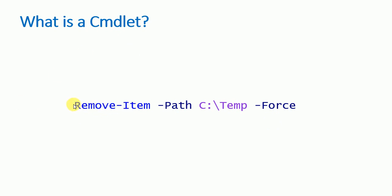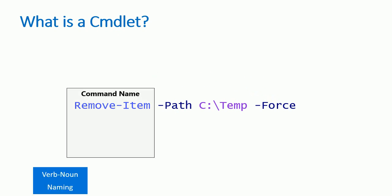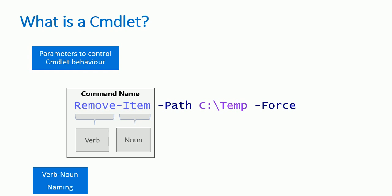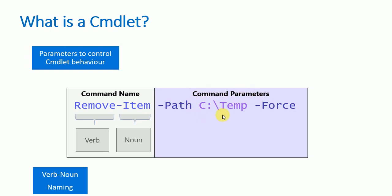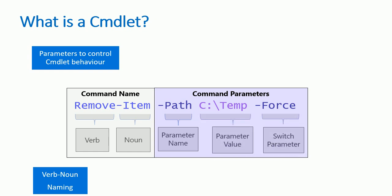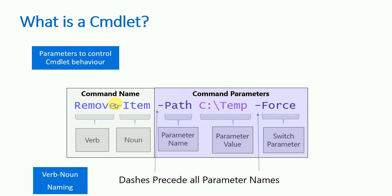Now let's understand what a cmdlet is. Here's a command: Remove-Item -Path C:\Temp -Force. This part is the command name, using verb-noun naming — 'Remove' is the verb, 'Item' is the noun. These are the parameters that control the cmdlet's behavior. '-Path' is a parameter name, 'C:\Temp' is the parameter value, and '-Force' is a switch parameter. All parameter names are preceded by dashes.